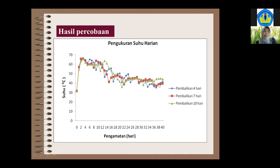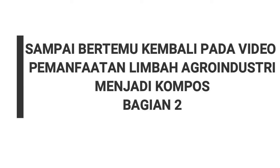Dari tiga perlakuan ini, kelihatan bahwa kalau dibalik empat hari sekali itu terlalu sering, sehingga panasnya kurang — pada saat dibongkar panasnya terekspos atau menguap, sehingga sering terjadi penurunan suhu yang mengganggu pertumbuhan terutama organisme termofilik. Pembalikan tujuh sampai sepuluh hari inilah yang optimal, dilihat dari penurunan C/N rasio. Untuk tumpukan limbah, patokan saya sekarang tujuh sampai sepuluh hari, karena lebih cepat dari itu tidak berbeda hasilnya.